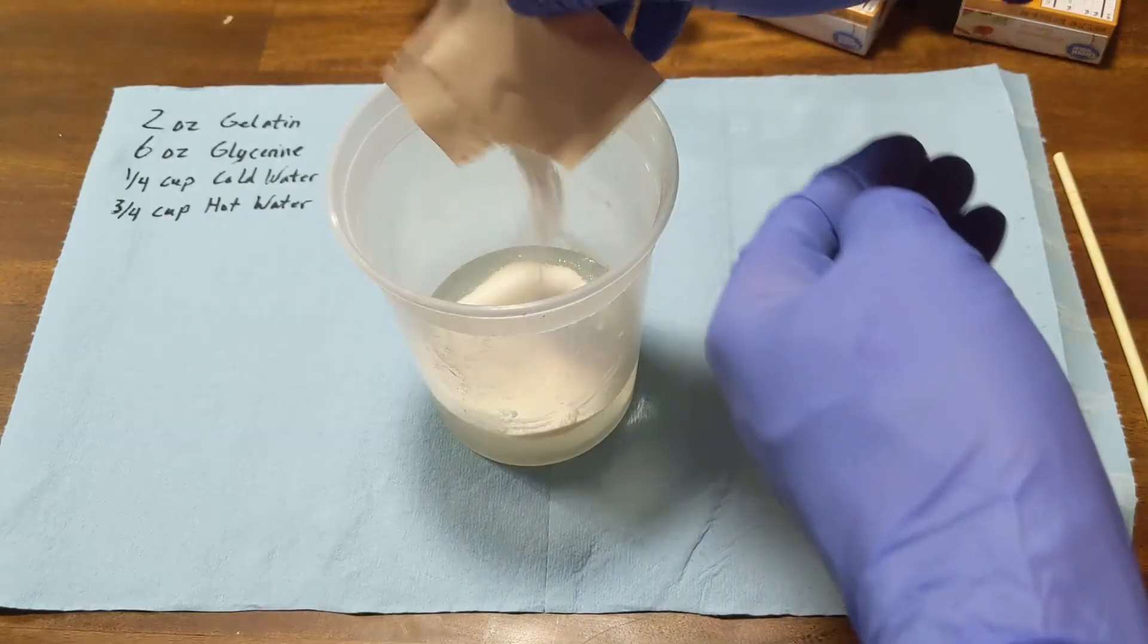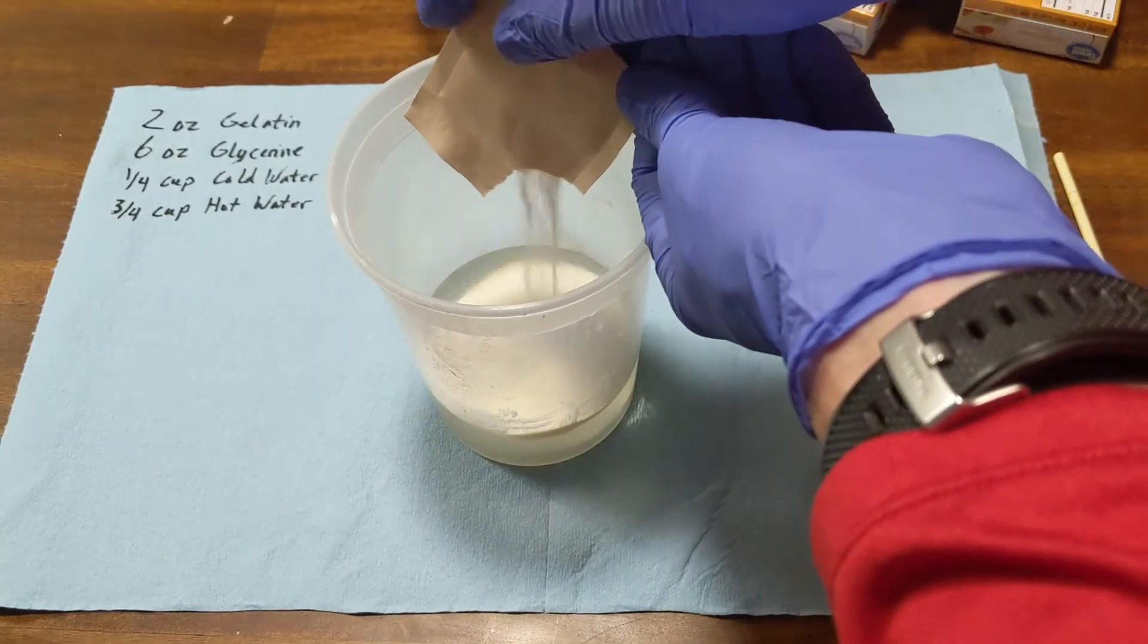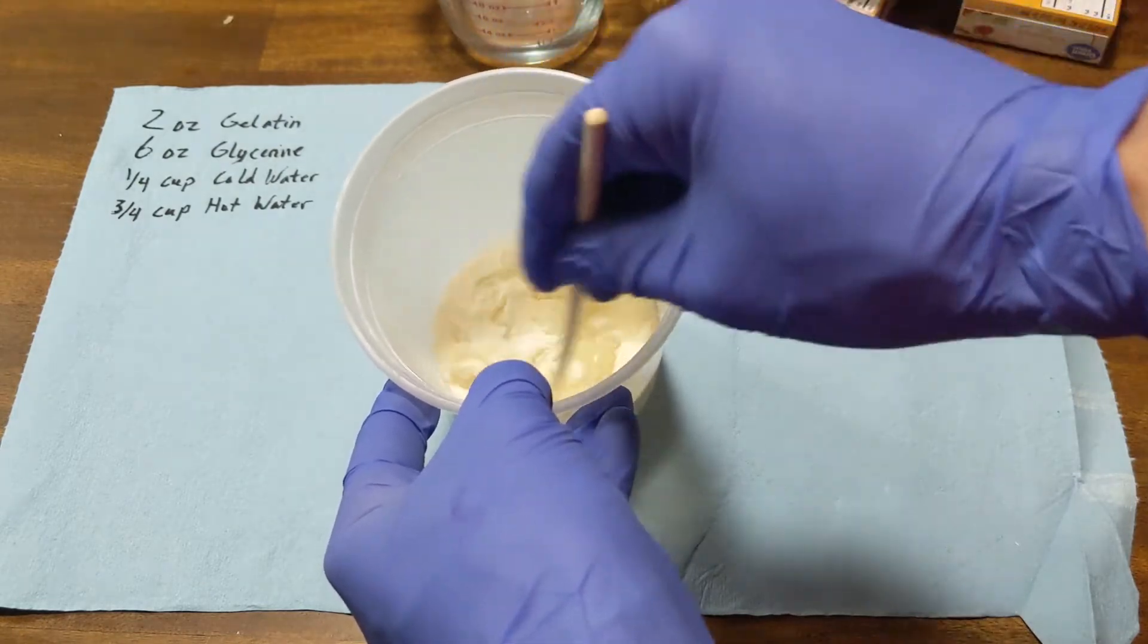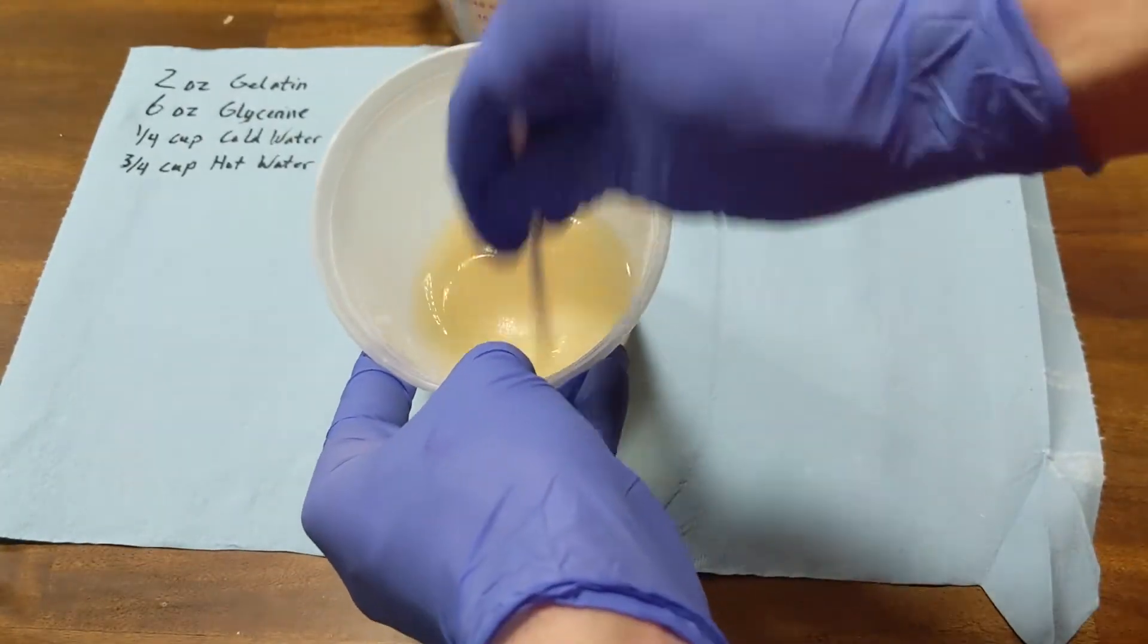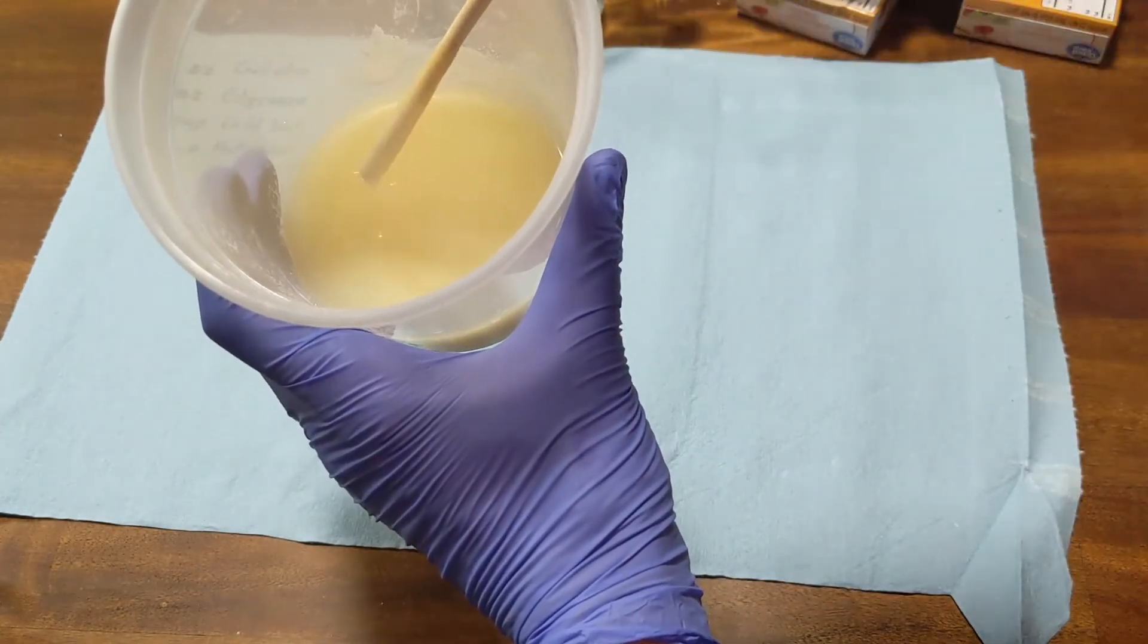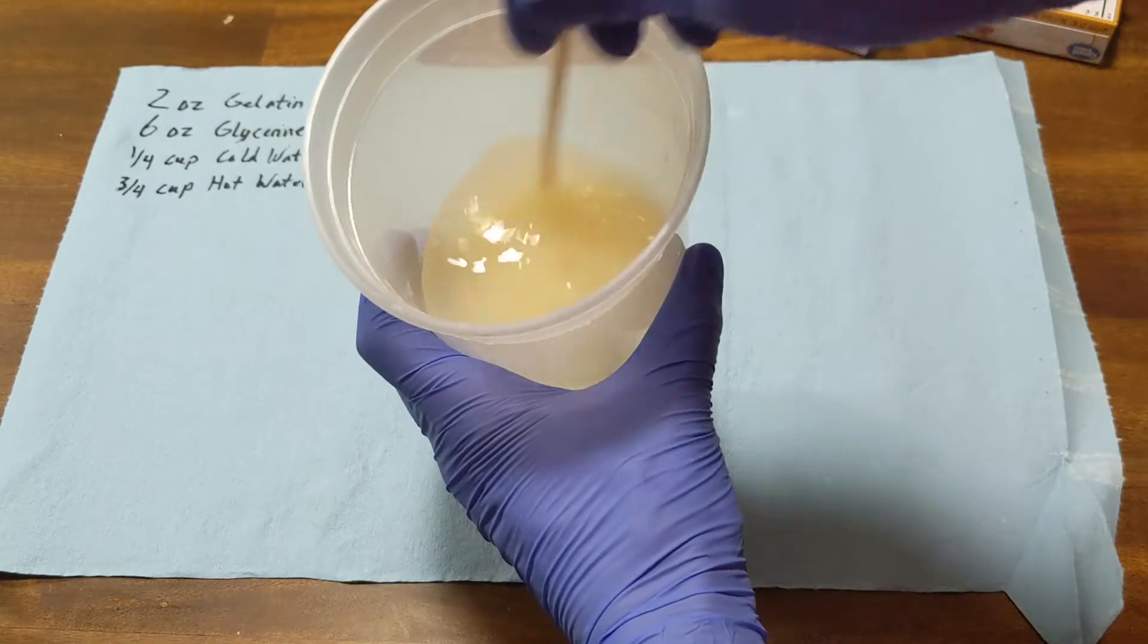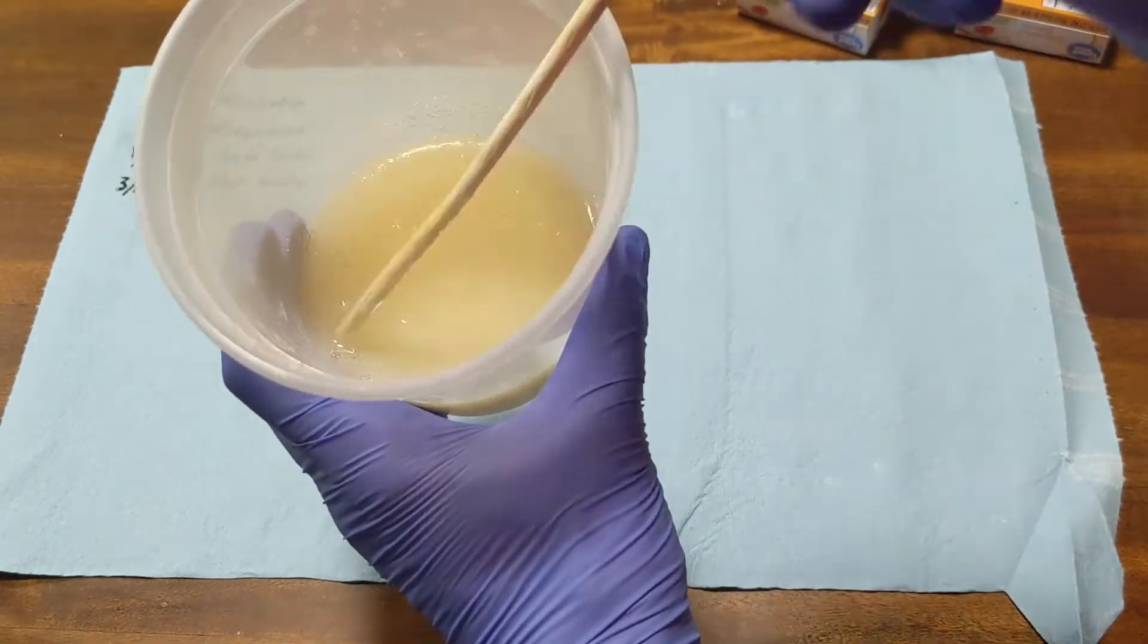So I'm going to put my gelatin in and then I'm gonna just use a chopstick to mix it up until all of the gelatin is dissolved into the glycerin, which is a little bit thicker. It's probably the thickest part of this whole compound. After that's all mixed up, I will then add the cold water and mix it in. At that point what really activates it is the heat, the hot water. That's what makes it reusable. You can just put it in a microwave and remelt it down and reuse it.